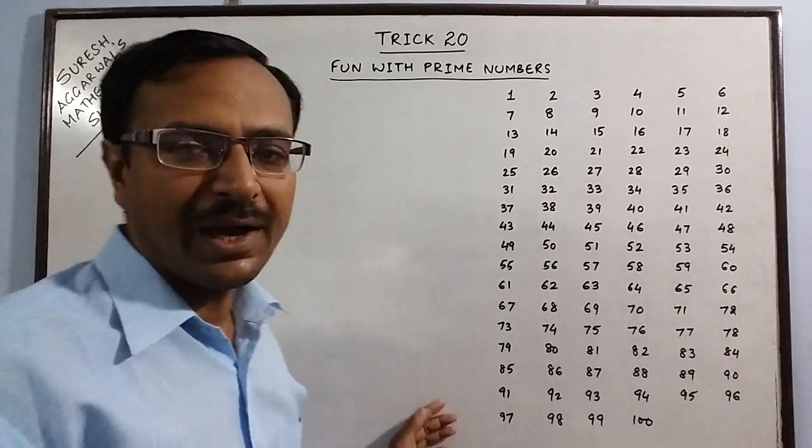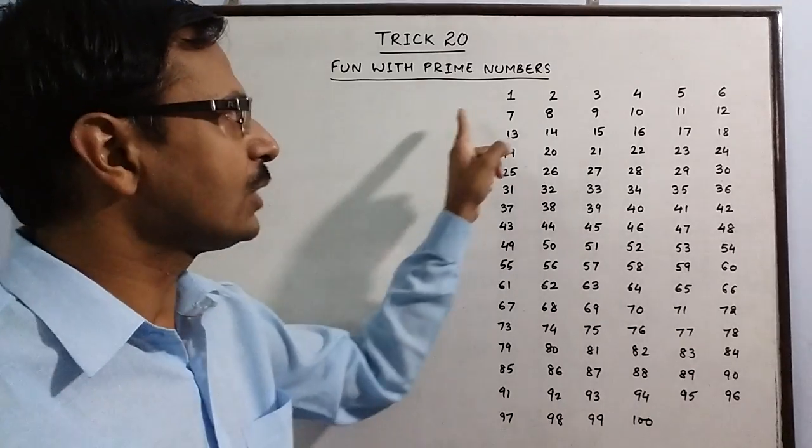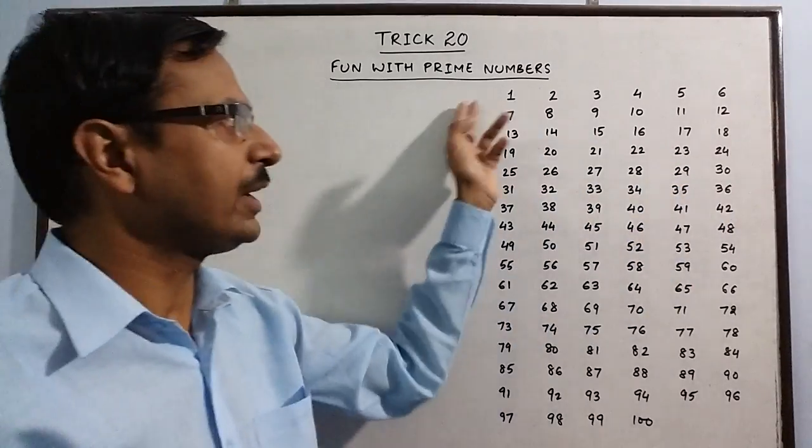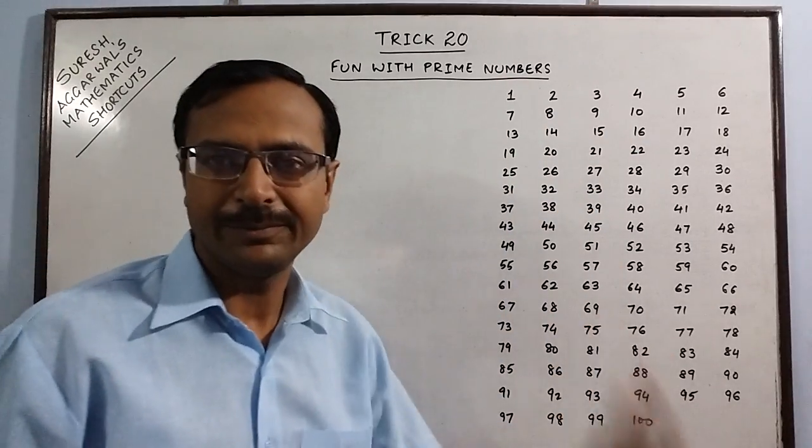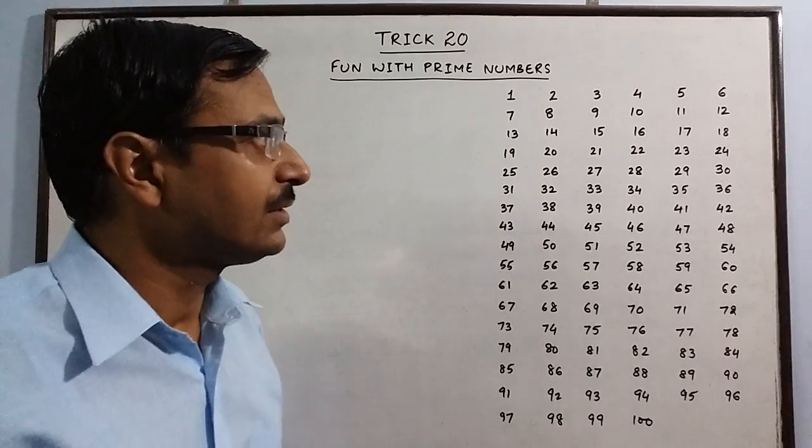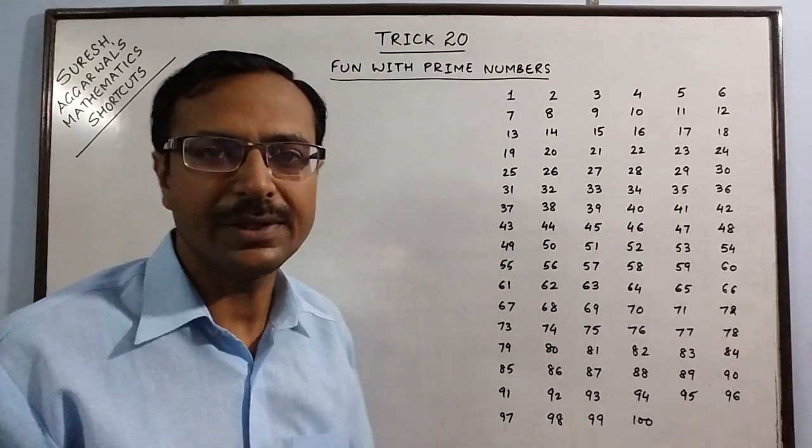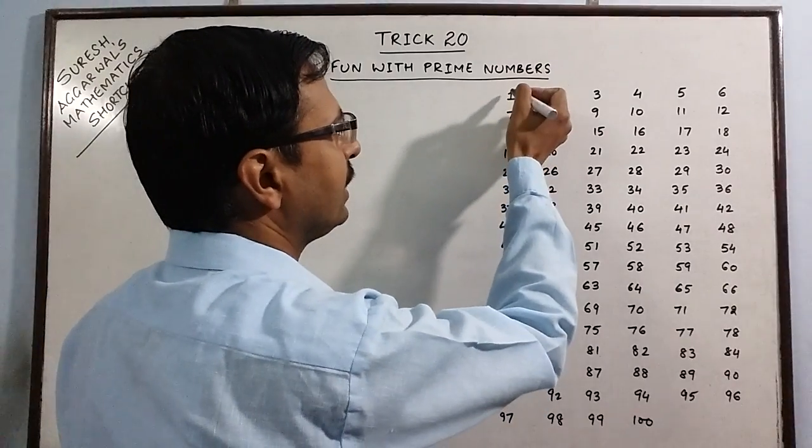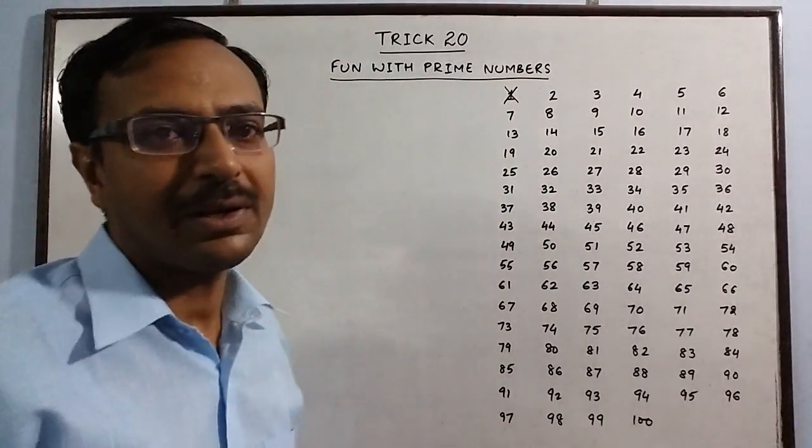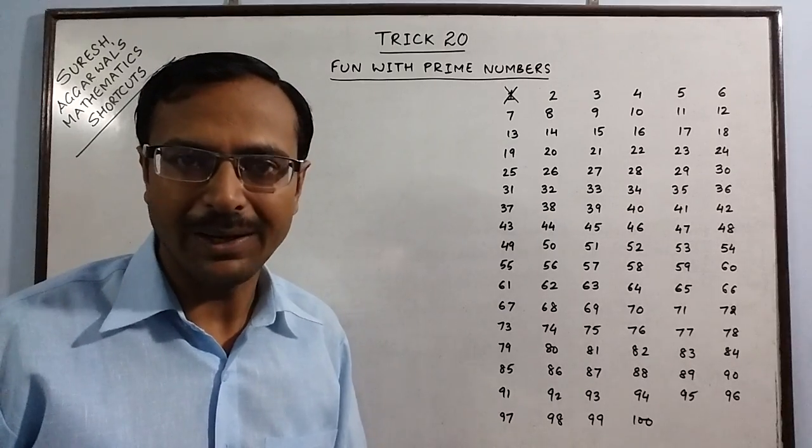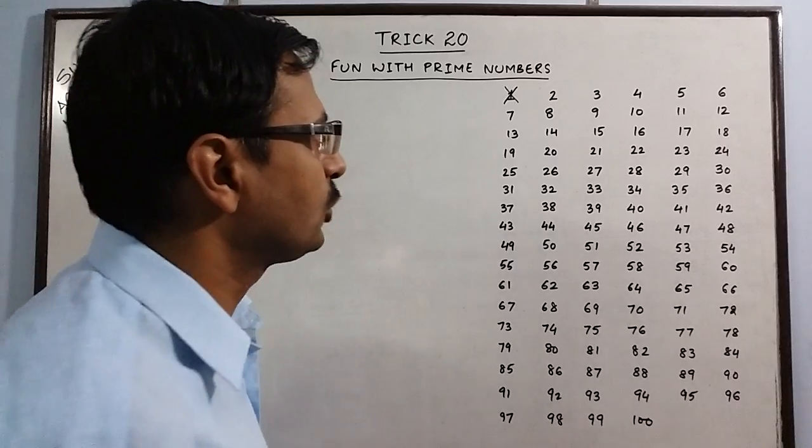So here I go. What I have done is I have written all numbers from 1 to 100 in rows of 6. So 1 to 6, 7 to 12, 13 to 18 and so on until I complete 100. Now when I start spotting the prime numbers, the first thing I do is I remember that 1 is not a prime number. It is not a prime number and it is not a composite number as well. So we have to forget 1. Now we start from 2.